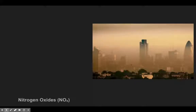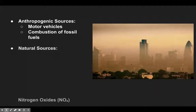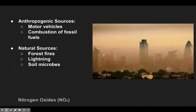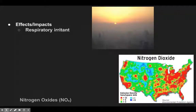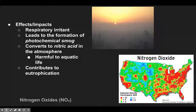On to nitrogen oxides — noted as NOx, where the x indicates one or two oxygen atoms per nitrogen atom, so it could be nitric oxide or nitrogen dioxide. They get into the atmosphere mainly through motor vehicles and fossil fuel combustion, but also forest fires, lightning, and microbes. Effects include being a respiratory irritant and leading to photochemical smog. In the atmosphere they convert to nitric acid, which ends up in aquatic systems. Too many nutrients in a body of water increases eutrophication, hypoxia, and die-offs, as we see in the Gulf of Mexico.